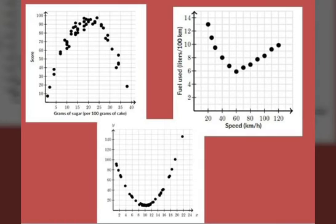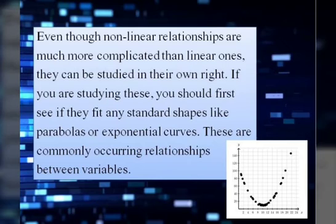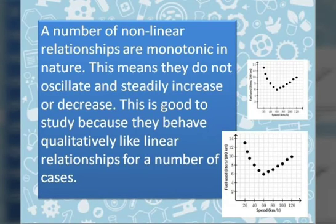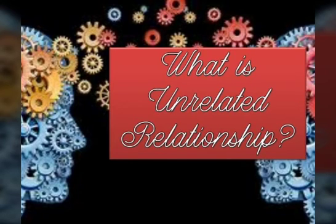What have you noticed in this example graph? Definitely, it is not a straight line — you can notice that these are modeled by a curved line. Unlike linear relationships which have a straight line, in a non-linear relationship the graph is modeled by a curved line. Even though non-linear relationships are much more complicated than linear ones, they can be studied in their own right. You should first see if they fit any standard shapes like parabolas or exponential curves. A number of non-linear relationships are monotonic in nature, meaning they do not oscillate and steadily increase or decrease.